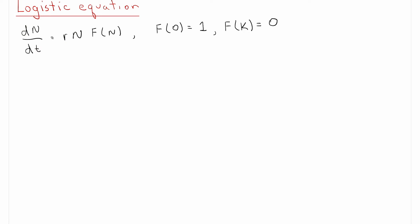With this requirement on the function F, where we know its value at two points, the simplest form for F will be a linear function. The correct linear function that is 1 at 0 and 0 at K is the function 1 minus n over K — linear in n. And that's the logistic equation.